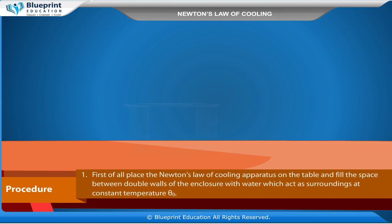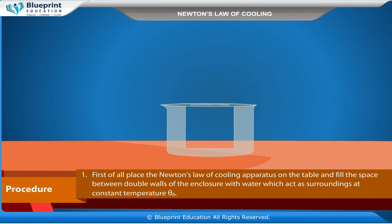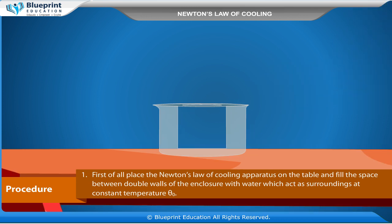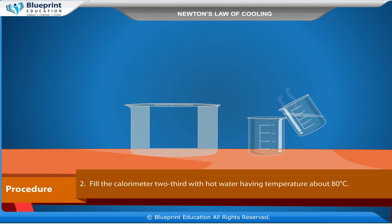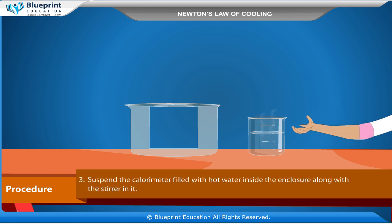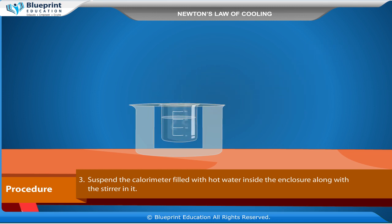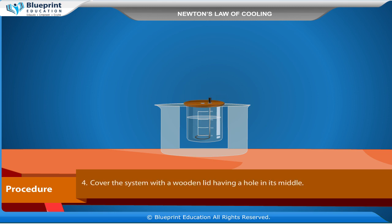Procedure: First of all, place the Newton's law of cooling apparatus on the table and fill the space between the double walls of the enclosure with water, which acts as surroundings at constant temperature θ₀. Fill the calorimeter two-thirds with hot water having a temperature of about 80 degrees Celsius. Suspend the calorimeter filled with hot water inside the enclosure along with the stirrer in it. Cover the system with a wooden lid having a hole in its middle.